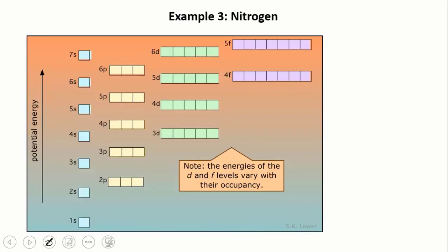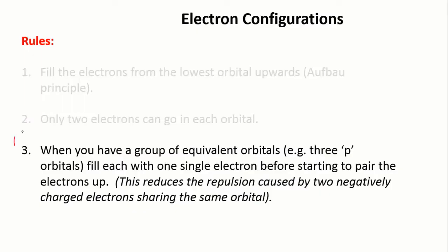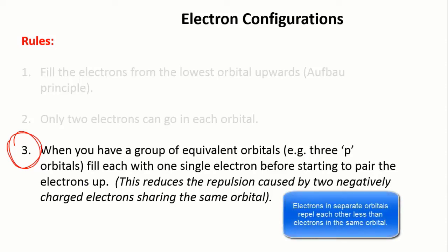Okay, example number three: nitrogen. Nitrogen is the seventh element, so seven electrons. As before, we fill up the 1s and the 2s orbitals, and now we have three electrons left. Perhaps the obvious thing to do would be to completely fill one of the 2p orbitals and half fill another, but this is where the third rule comes in. When you have a group of orbitals with the same energy, like three p orbitals together or five d orbitals, the orbitals get filled with one electron each first, and only then do the electrons start doubling up. The reason is that two negatively charged electrons occupying the same space will repel each other, which is unfavorable. This repulsion is minimized if you spread the electrons out.